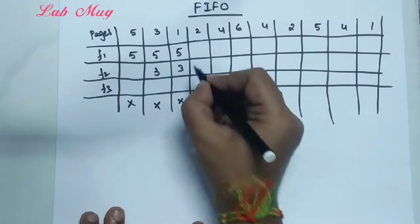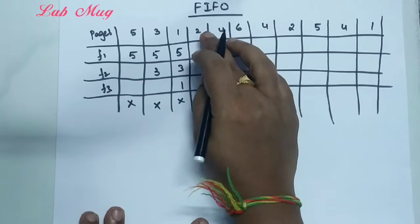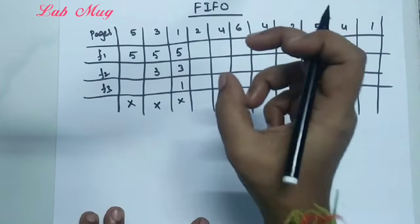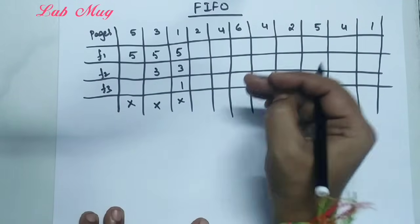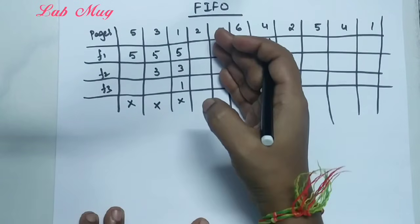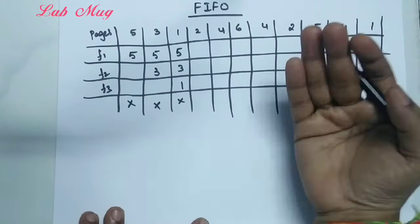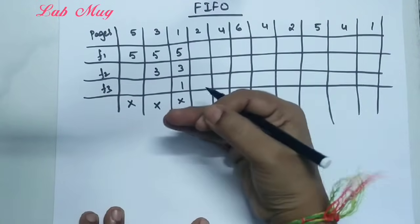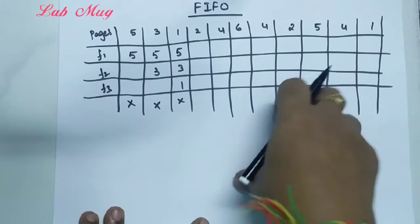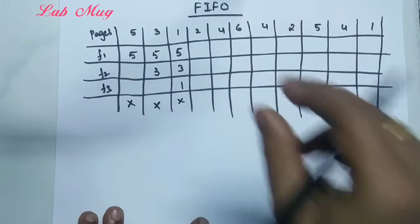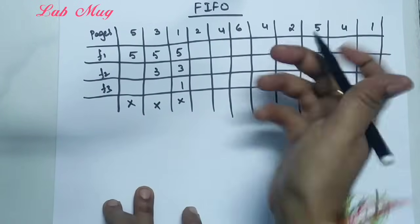So now frames contain 5, 3, and 1. The next page is 2, but there is no empty place in main memory because all 3 frames F1, F2, F3 are completely full. So now we need to decide which page to replace. Since this is First In First Out, whichever page was inserted first should be removed first.